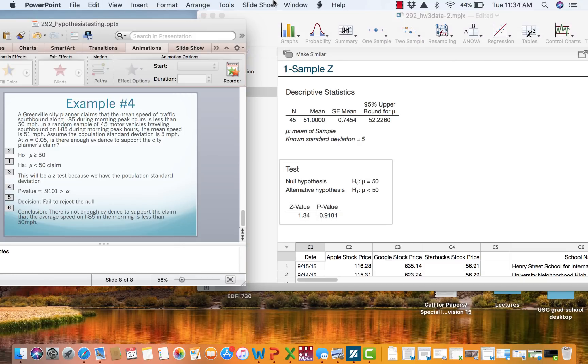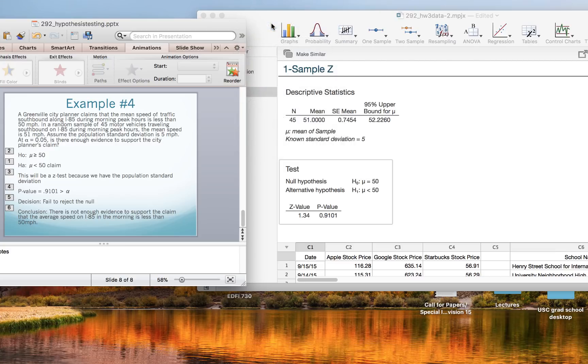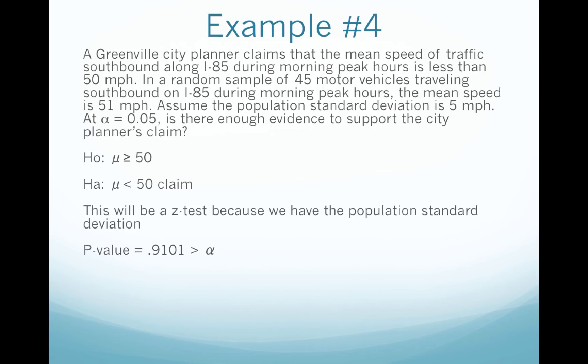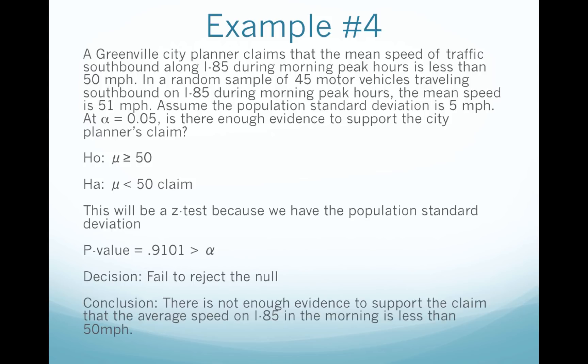We take that back over to PowerPoint. The p-value of .9101 is clearly bigger than alpha of 5%. When the p-value is bigger than alpha we fail to reject the null. The alternative is the claim and we fail to reject the null, so there is not enough evidence to support the claim that the average speed on I-85 in the morning is less than 50 miles per hour.